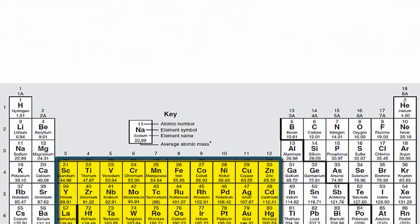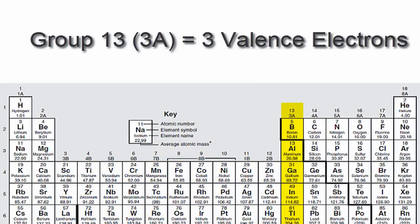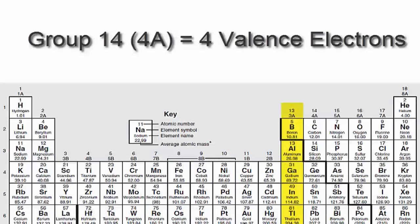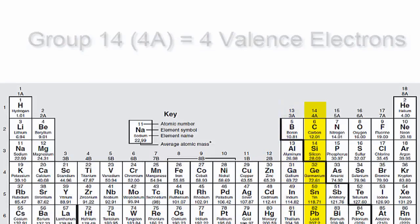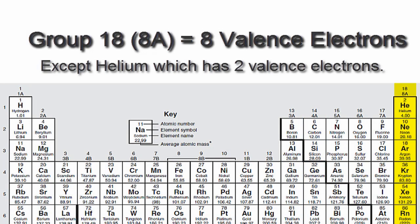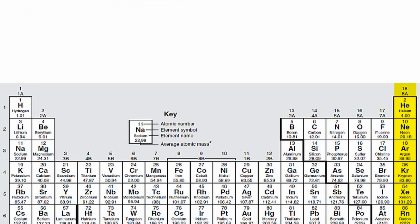We'll skip over the transition metals since they're a bit more complicated and probably don't apply to you. We'll go to 13 or 3A, which have three valence electrons, then 14 or 4A, each of those elements have four valence electrons, all the way up to group 18 or 8A, which have eight valence electrons.